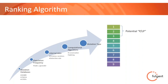We have a ranking algorithm developed at Fulgent that uses things like population frequency, databases, internal data, and algorithms to prioritize which variants to look at. This is something I'm very interested in developing over time so we can improve our detection rate, efficiency, and turnaround time, because the hardest part is still the curation of many variants.